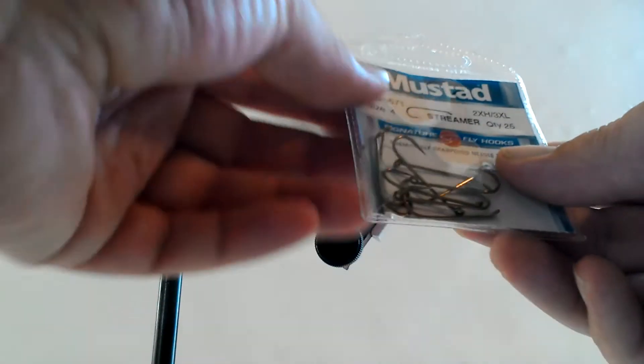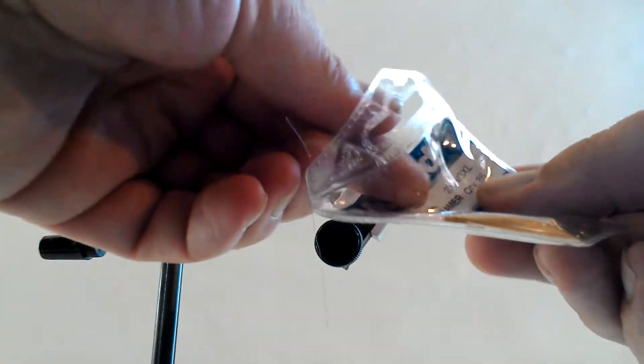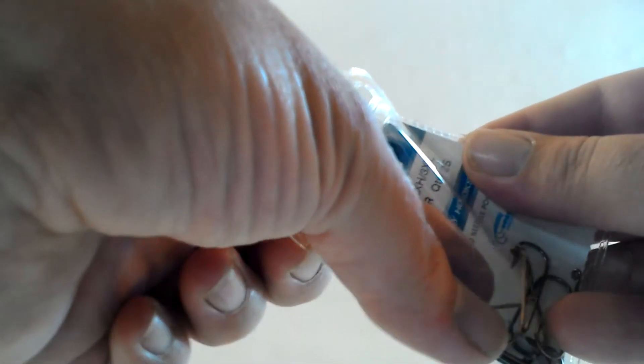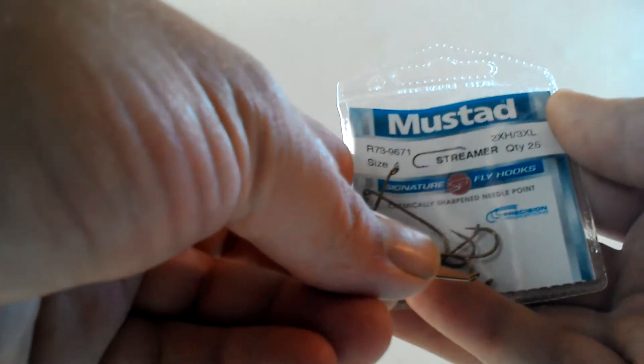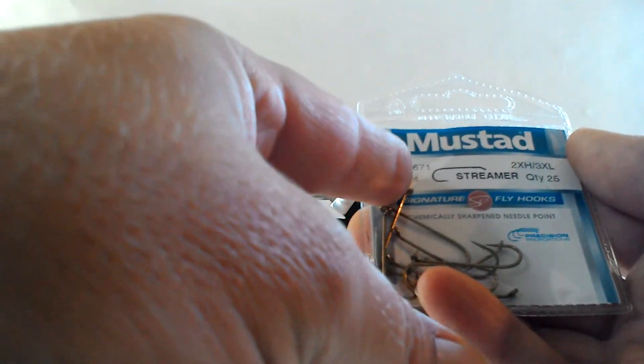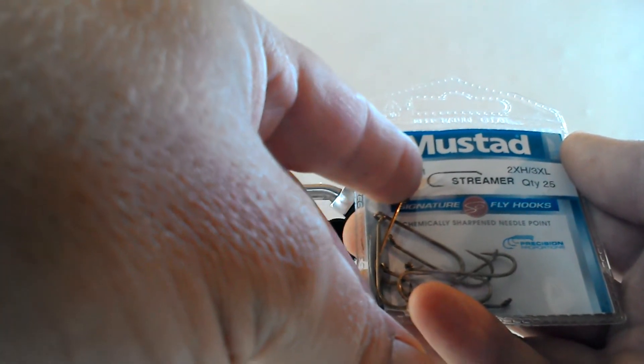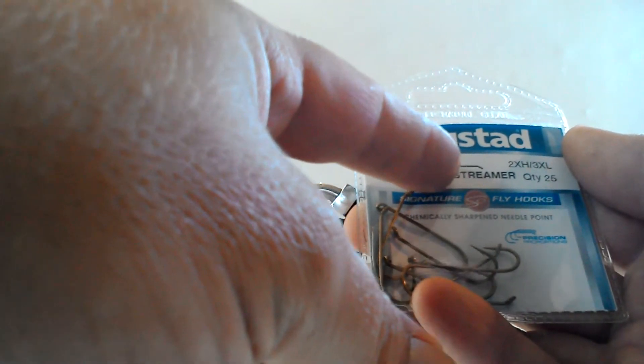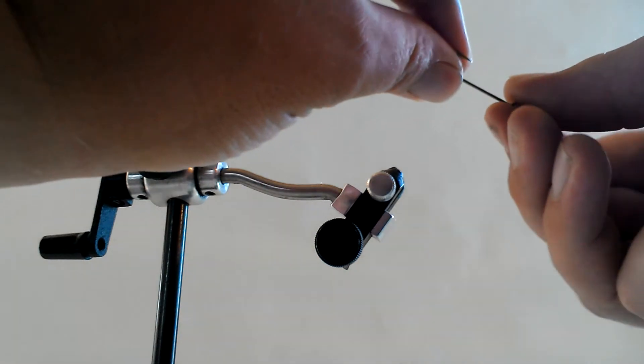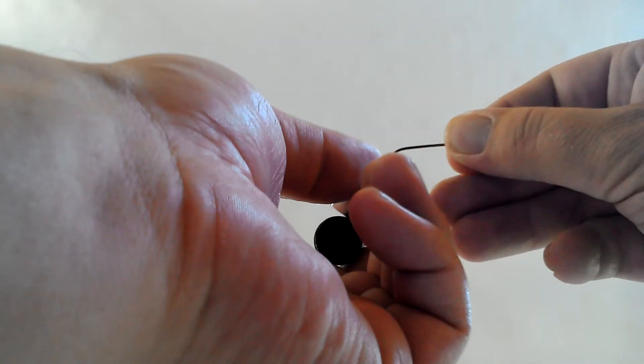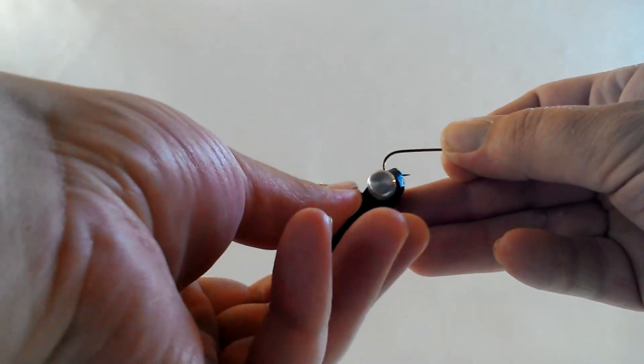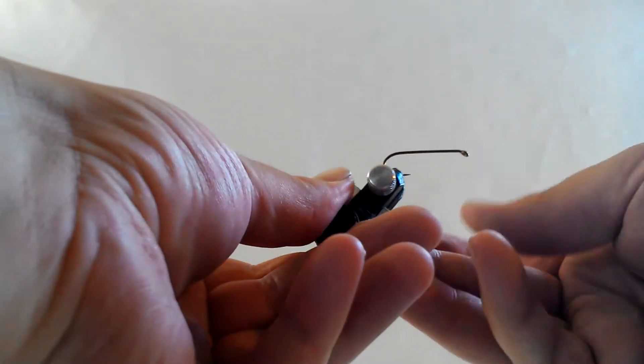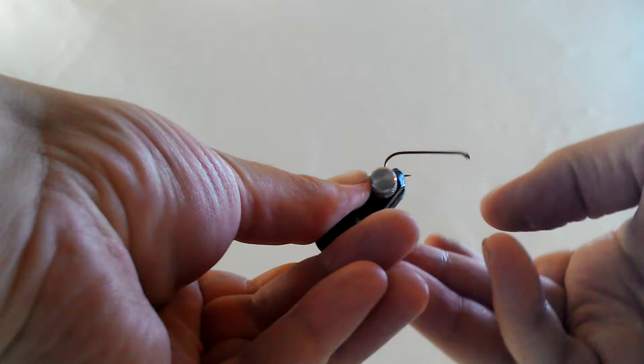Now, the hook. I'm just going to use a number four hook. This is an Aberdeen style hook, but if you must know all the specifics, it is a Mustad R73-9671. We're just going to place it right side up in the hook. Get it down tight so you can hear it sing.